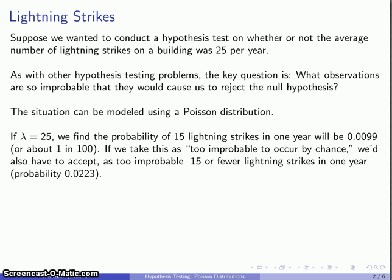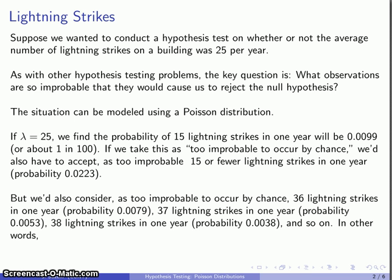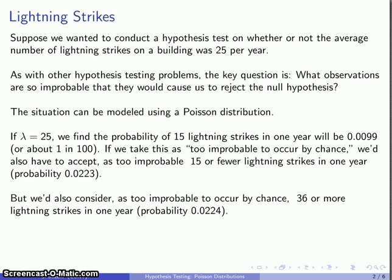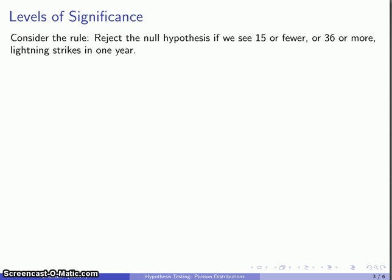For consistency, we'd also have to regard other outcomes as being too improbable to support the null hypothesis — for example, 36 lightning strikes, 37, 38 and so on up. This gives us another set of events that we would consider too improbable, and 36 or more lightning strikes in a year also has a probability of about 1 in 45. So putting this together, this gives us a rule for when to reject the null hypothesis of an average of 25 lightning strikes in one year: if we see 15 or fewer or 36 or more lightning strikes in one year.